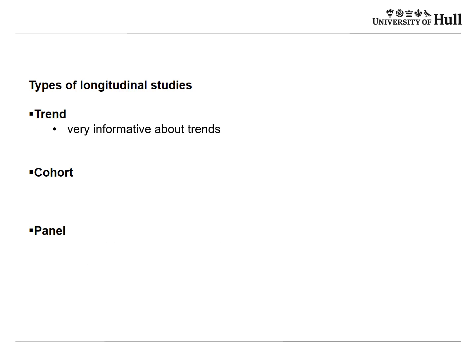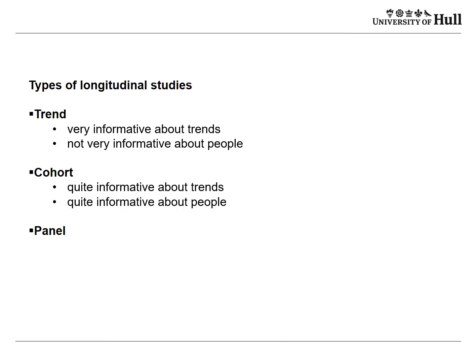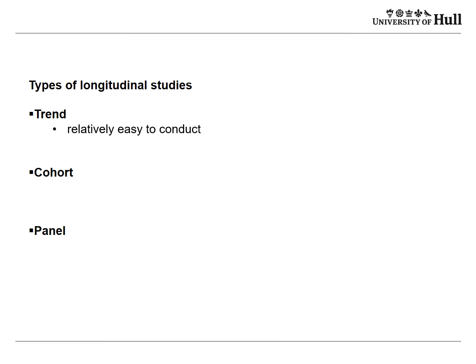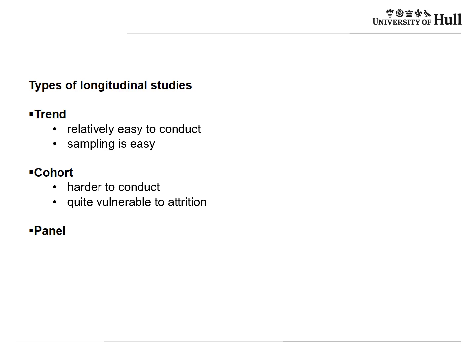Trend studies are very informative about trends but not about the people in them. Cohort studies are quite informative about both trends and people. Panel studies are least informative about trends but most informative about people. Trend studies are relatively easy to conduct — essentially a series of cross-sectional studies with easy sampling. Cohort studies are harder and vulnerable to attrition; panel studies are very hard to conduct and also very vulnerable to attrition.